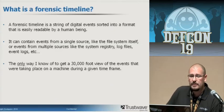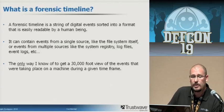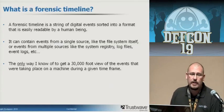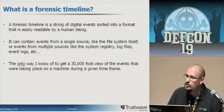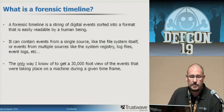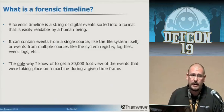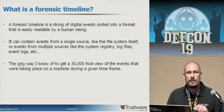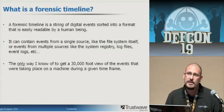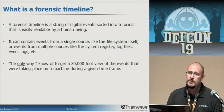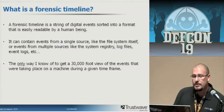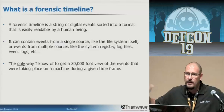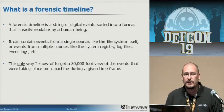What is a forensic timeline? A forensic timeline is a string of digital events sorted into a format that can be easily read and interpreted by a human being. It's extremely useful in breach investigations. It can contain events from a single source like the file system, or log files, registry hives, event logs — just about anything that records a timestamp can be dumped into a super timeline. It's really the only way I know of to get that 30,000-foot view of what happened on a particular host around a specific time.